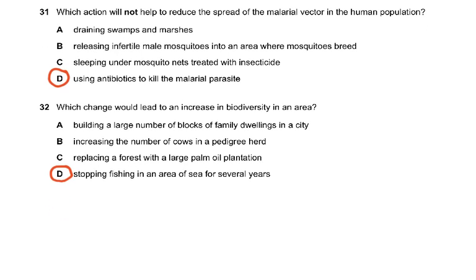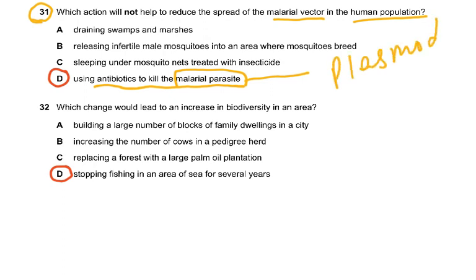Coming on to question 31: which action will not help reduce the spread of the malarial vector in the human population? Using antibiotics to kill the malarial parasite — the malarial parasite is not a bacteria. It is Plasmodium, which is a protozoan. Plasmodium is not a bacteria, so we do not give antibiotics in malaria. We give medicines like chloroquine to kill the Plasmodium.